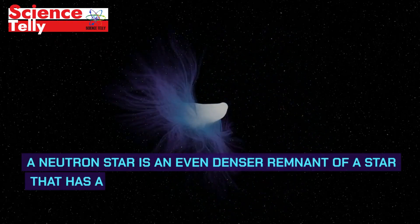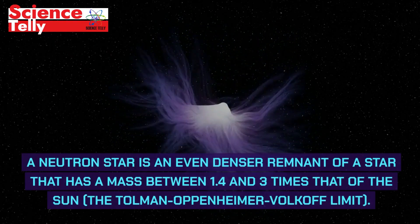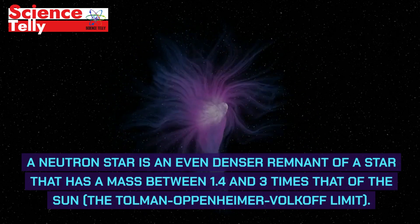A neutron star is an even denser remnant of a star that has a mass between 1.4 and 3 times that of the sun, the Tolman-Oppenheimer-Volkoff limit.